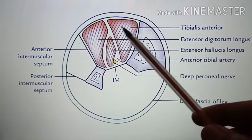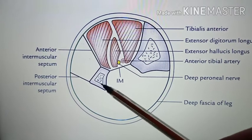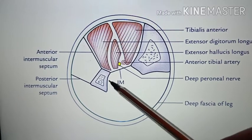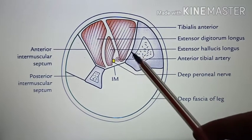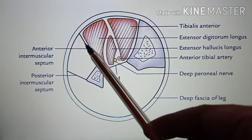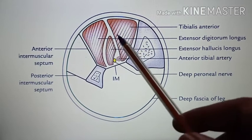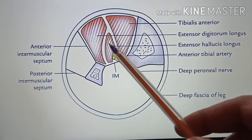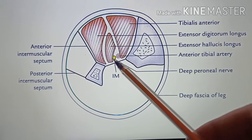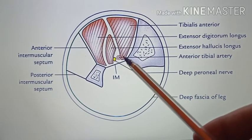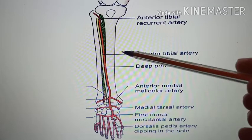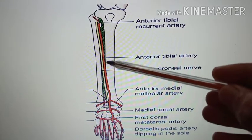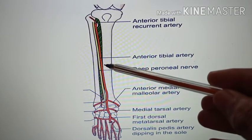In this slide you can see the tibia on the medial side and the fibula on the lateral side. In between the anterior intermuscular septum and above the interosseous membrane is the anterior compartment of the leg. Here you can see the deep peroneal nerve, which is present along with the anterior tibial artery.